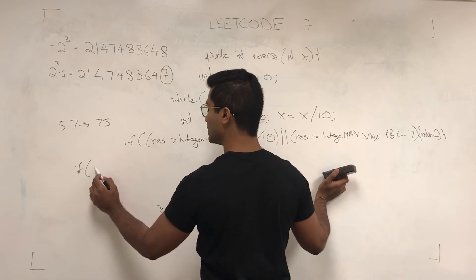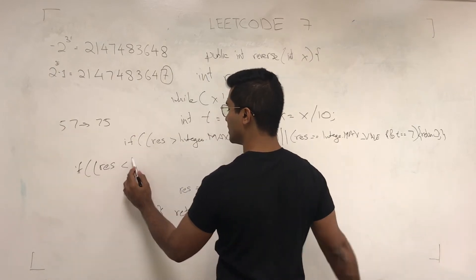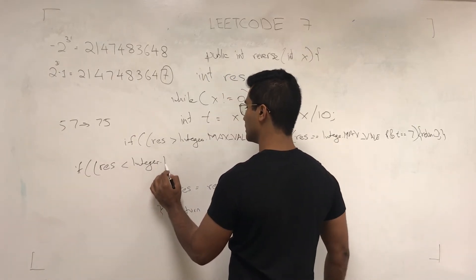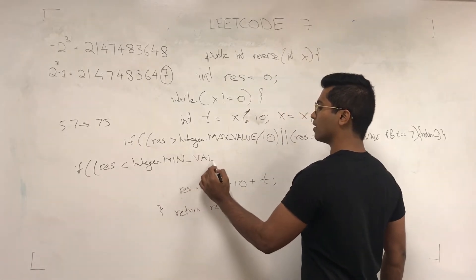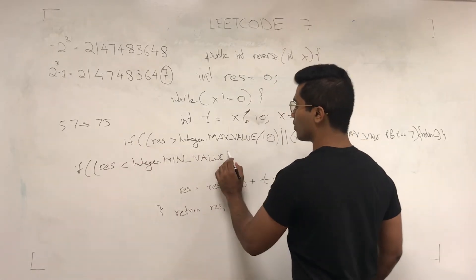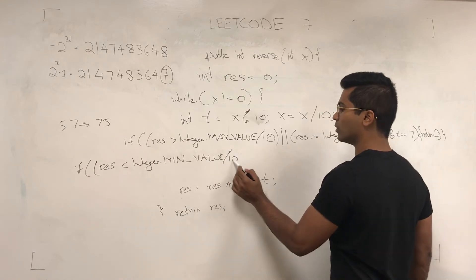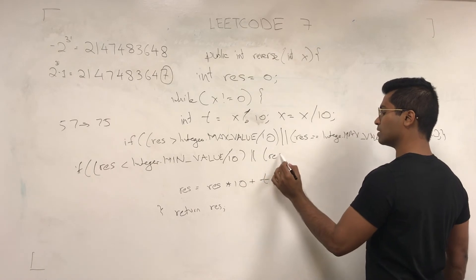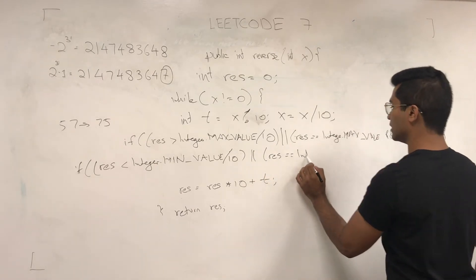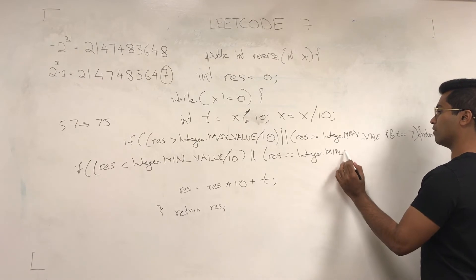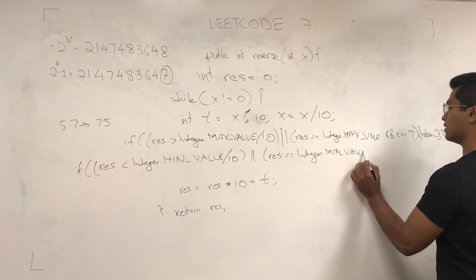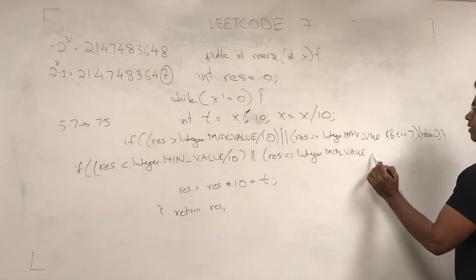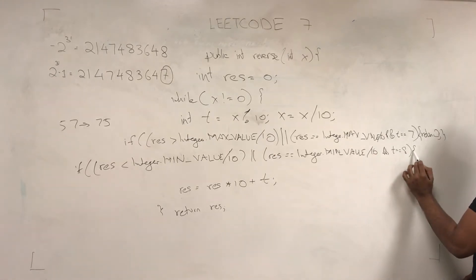Or the same thing: if it's less than the minimum value by 10, again, because the length of res at this point in time is not going to be the same length as these guys. Or if res is equal to integer.minValue by 10, and t is equal to 8, then we return 0.